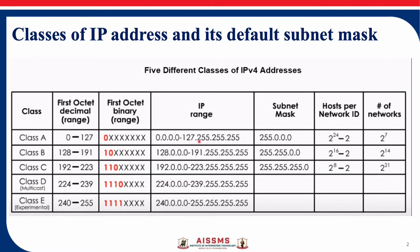These are the ranges given for the classes. The subnet masks you can see: for Class A it is 255.0.0.0, for Class B it is 255.255.0.0, and for Class C it is 255.255.255.0. For Class D and Class E there are no subnet masks because Class D is reserved for multicast and Class E is reserved for experimental or R&D purposes. This column defines host per network ID.